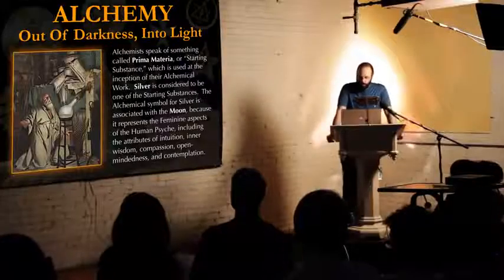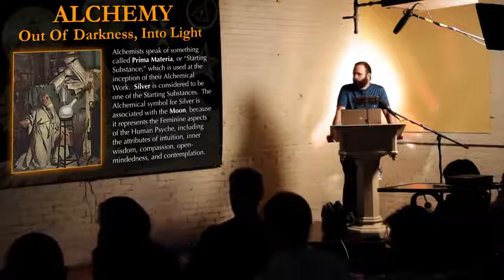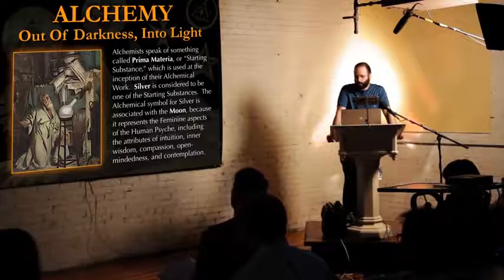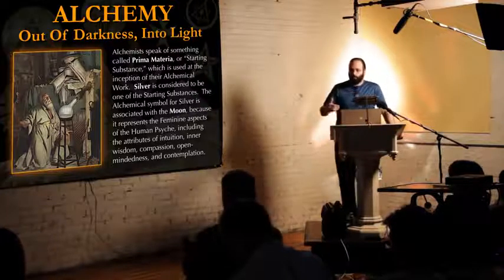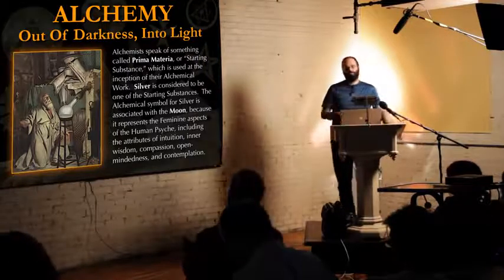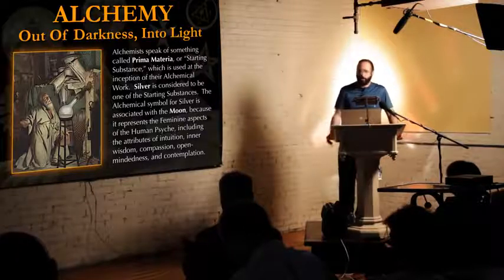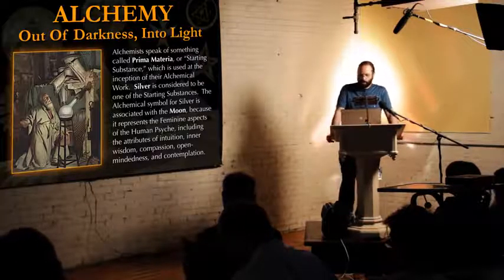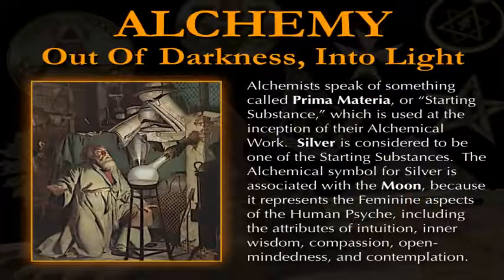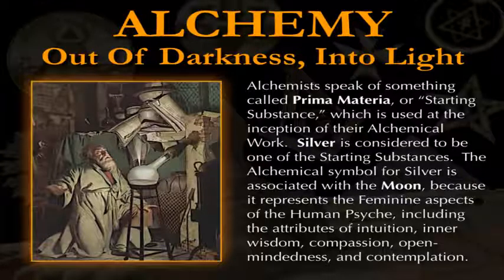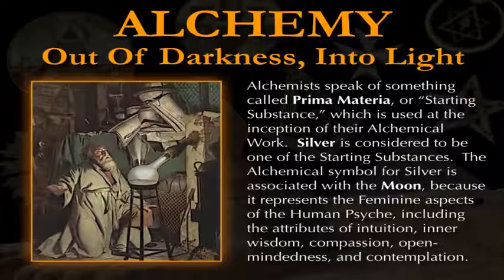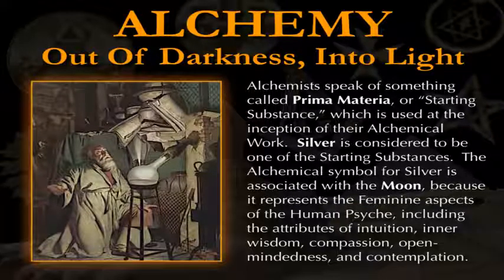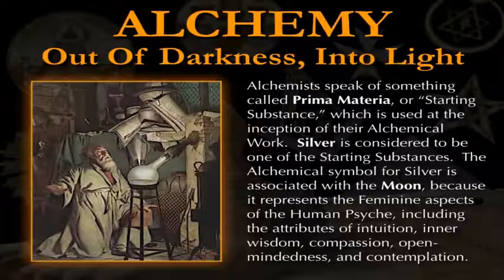Alchemists speak of something called prima materia or starting matter, starting substance. The starting substance is the human being that needs to be purified, that needs the impurities removed from them so that they can come to a more clear and accurate and de-occulted understanding of the laws of nature. The starting substance or prima materia is used at the inception of the alchemical work, the beginning. Silver is considered to be one of the starting substances. Silver is one of the main sources of prima materia in alchemy. The alchemical symbol for silver is the moon, or is associated with the moon.